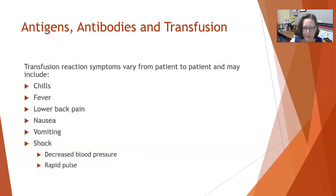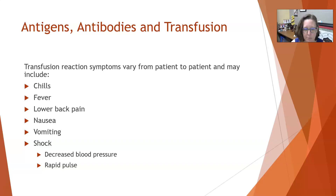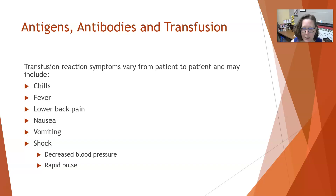Transfusion reactions are very important to identify. Symptoms can vary from patient to patient and can include chills, fever, low back or flank pain, nausea, vomiting, and shock — evidenced by decreased blood pressure and a rapid pulse. The nurse is supposed to check blood pressure usually every 15 minutes during a transfusion, checking pulse as well and looking for any changes. What we're looking for is the pulse going up and the blood pressure dropping. That wraps up this introduction to immunohematology — see you in the next video.